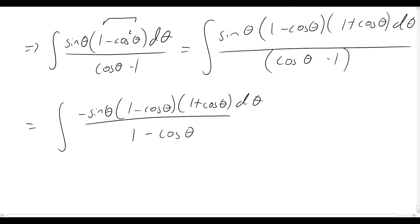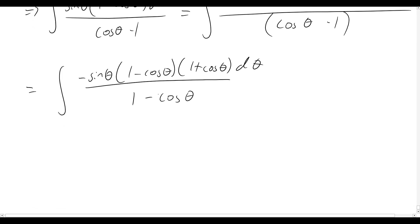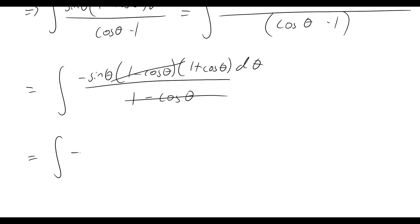All we've done is multiplied by minus 1 over minus 1, which is just multiplying by 1. Now we can simplify: we've got 1 minus cos theta on both top and bottom, so those cancel. Our problem simplifies down to the integral of negative sine theta times 1 plus cos theta, d theta.